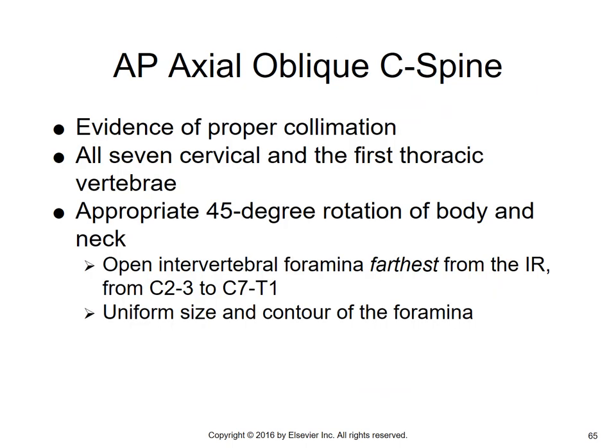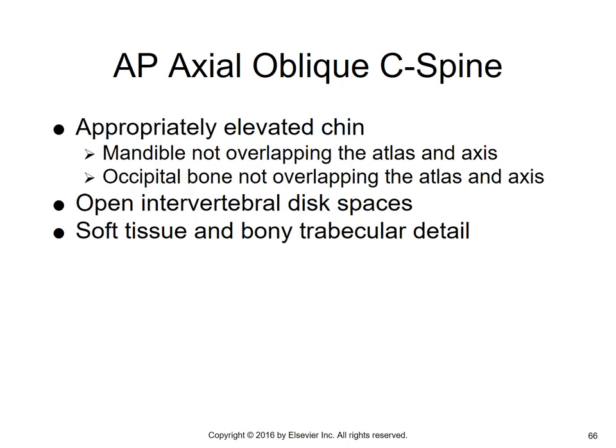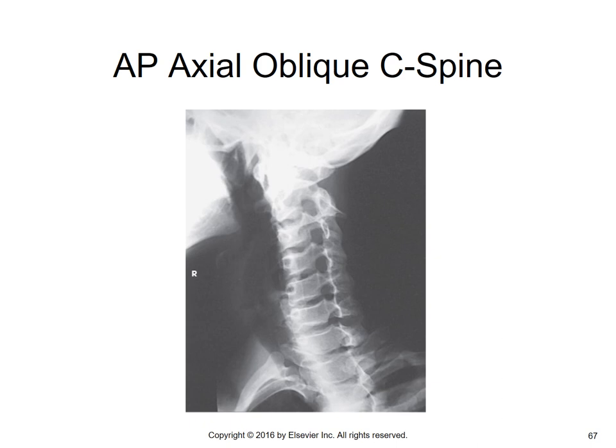For AP axial oblique C-spine evaluation: all seven cervical and first thoracic vertebrae are seen, appropriate 45-degree rotation of body and neck. For AP obliques, the open intervertebral foramina farthest from the IR from C2-3 to C7-T1 are demonstrated with uniform size and contour. The chin is appropriately elevated so the mandible and occipital bone are not overlapping the atlas and axis. Open intervertebral disc spaces and soft tissue and bony trabecular detail are seen. On the image, the black holes immediately behind the vertebral bodies are the intervertebral foramina.